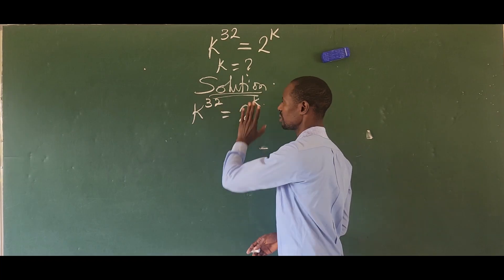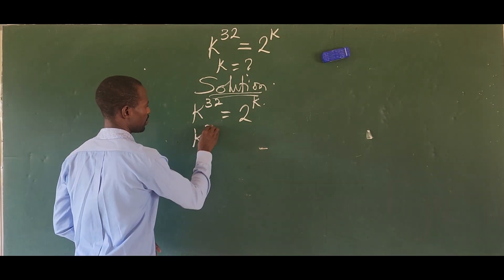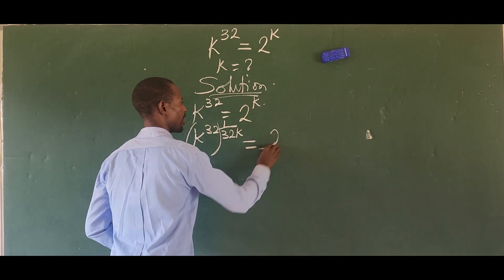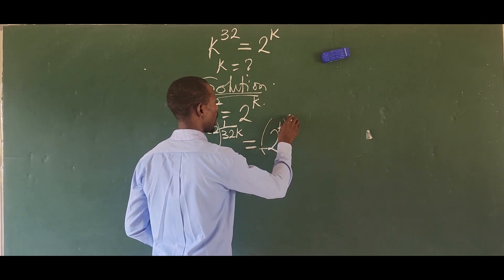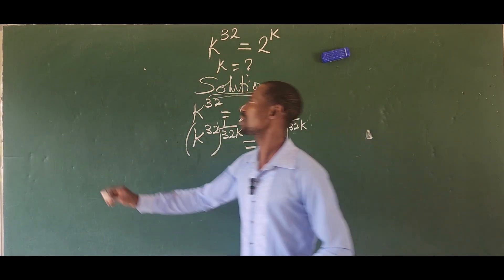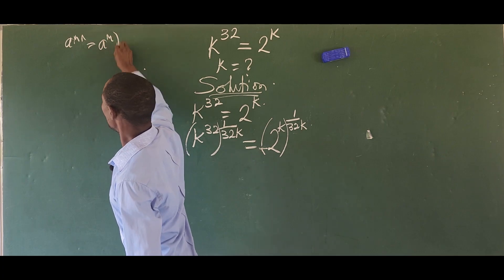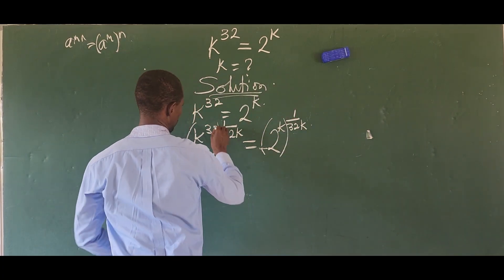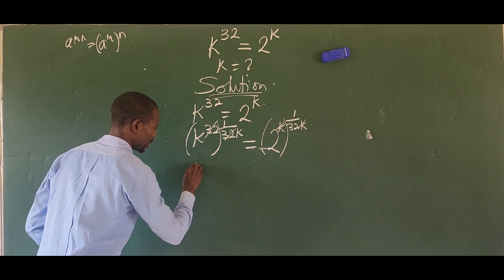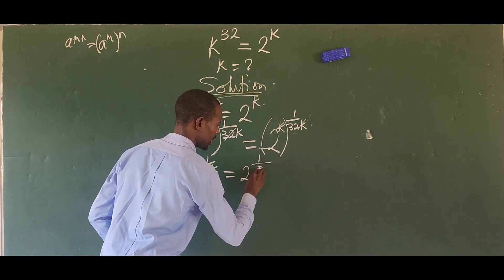In other words, we want to raise both sides of the equation to the power of 1 over 32k. So this gives us k to the power of 32, raised to 1 over 32k, equal to 2 to the power of k, raised to 1 over 32k. We apply the law of indices which says a to the power of m times n equals a to the power of m, all in bracket, raised to n. Meaning we cancel out the 32 and the 32, and k cancels with k. So we are left with k raised to 1 over k, equal to 2 raised to 1 over 32k.